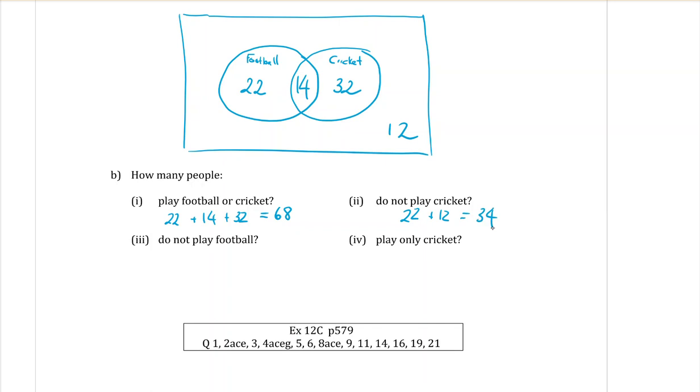How many people do not play football? So now we want to ignore anything in the football circle, which means we want 32 plus 12, which is 44.